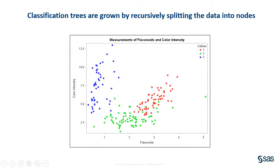A tree model splits the predictor space into segments which define the leaf nodes of the tree. The splitting is done in a recursive way. To see how this works, let's simplify the data. Suppose there are only two predictors: flavonoid content and color intensity. The scatter plot of these two variables represents the root node, which contains all the data.